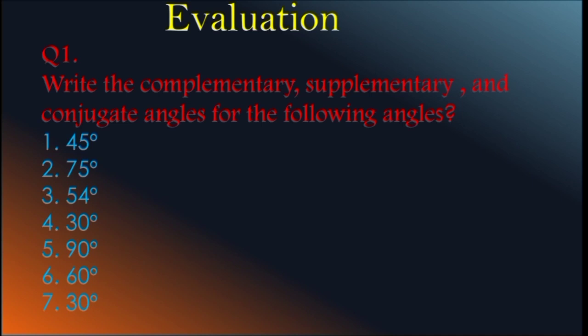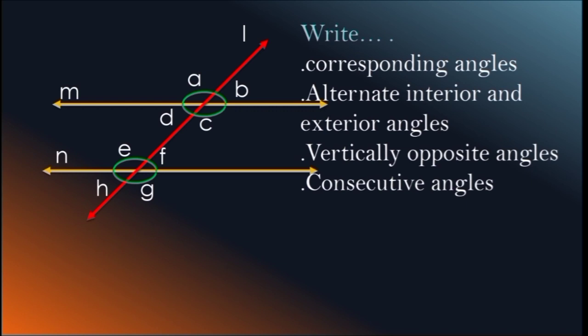Evaluation. Write the complementary, supplementary, and conjugate angles for the following angles: 45 degrees, 75 degrees, 54 degrees, 30 degrees, 90 degrees, 60 degrees, 30 degrees. Also write the corresponding angles, alternate interior and exterior angles, vertically opposite angles, and consecutive angles for the given figure and transversal.